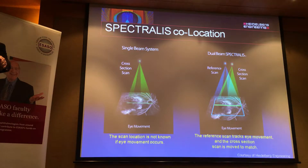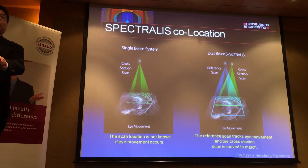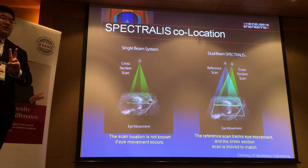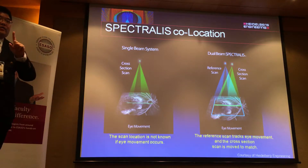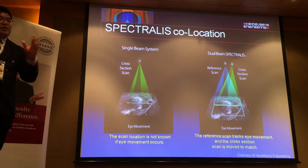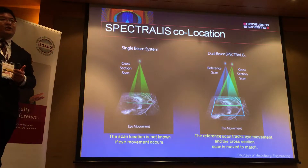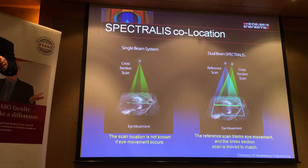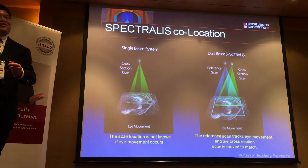One important thing is to consider co-location. Some devices, like Spectralis, can do two scans simultaneously — you can do an OCT and an FA at the same time. Two images appear on the same screen, and when you put your cursor over one, you can see the corresponding point on the other. You can also do it for FA and ICG — most combinations are possible.